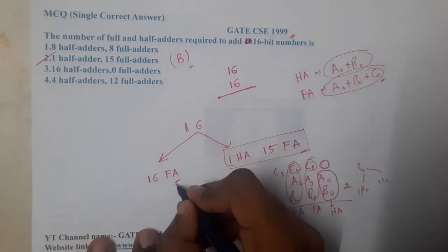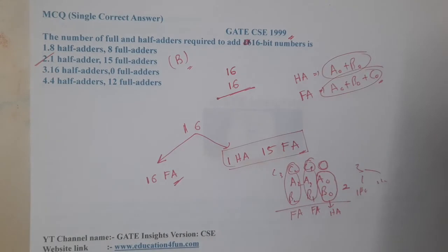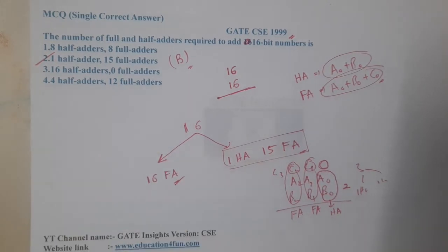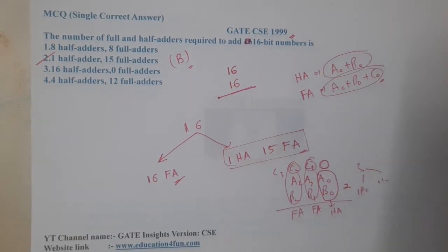One of you will be saying, if in our case 16 full adders is also there, what should we do? At that time, both of them will be correct. These type of questions could be asked in multiple select questions.